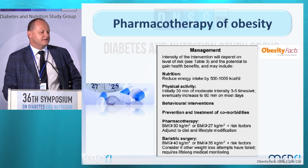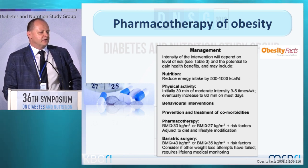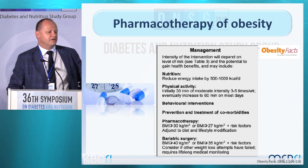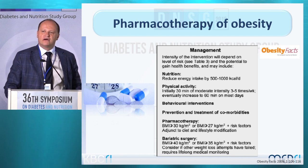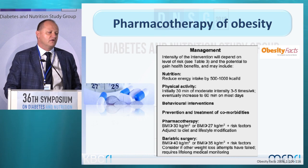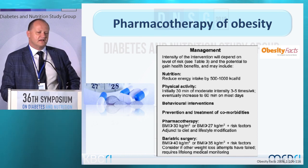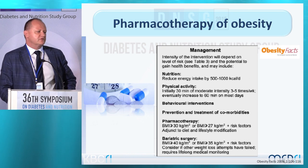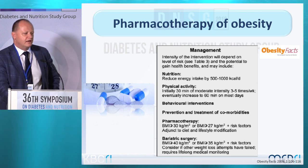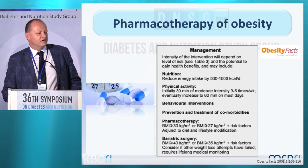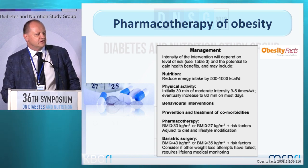We also have options for behavioral interventions, prevention and treatment of comorbidities, and pharmacotherapy. Pharmacotherapy is mostly for those with BMI over 30, or alternatively for those with BMI over 27 with risk factors, combined with diet adjustment and lifestyle modification. Finally, we have endoscopic interventions and bariatric surgery for those with BMI more than 35 or more than 40.